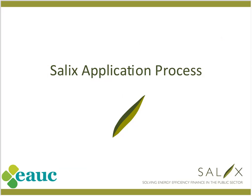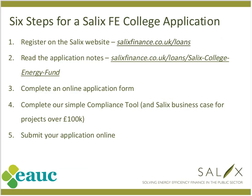I'll now talk you through how you can actually apply for a Salix loan. The application process is broken down into six easy steps: first, register on the website; second, read the application notes; third, complete the online application form with contact details; fourth, complete a compliance tool with the project details; fifth, submit your application online. Once submitted, we carry out our technical checks and it's in our hands from that point.